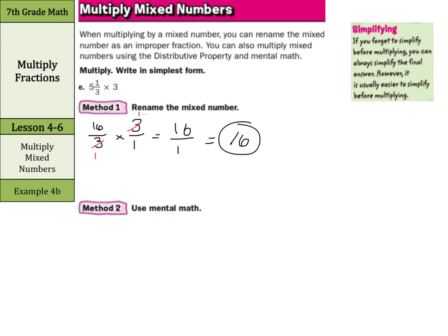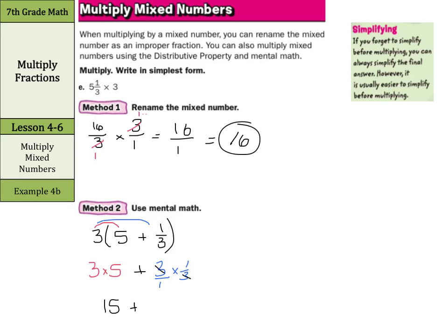Using mental math, take the whole number three and multiply it by five plus one-third — breaking five and one-third apart. Distributing: three times five is fifteen, plus three over one times one-third. Three over one times one-third gives three-thirds, which simplifies to one over one by dividing each by three. One over one is just one. So fifteen plus one equals, again, sixteen.